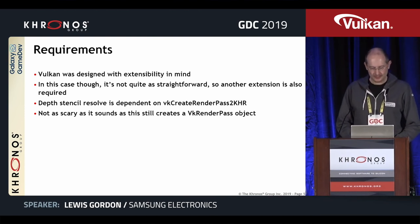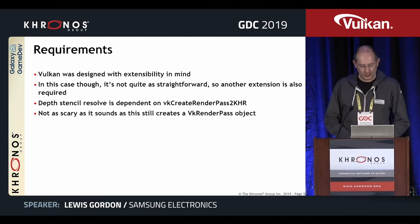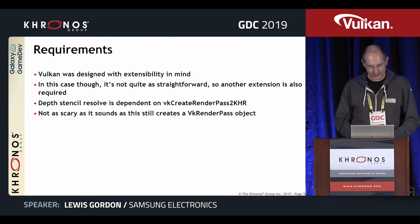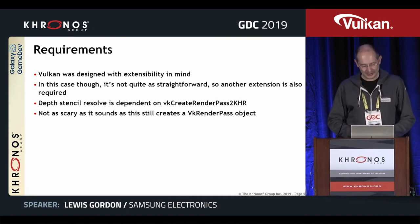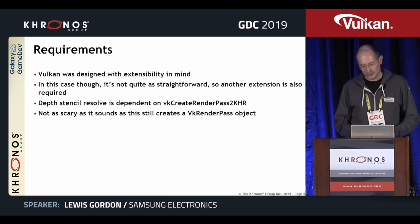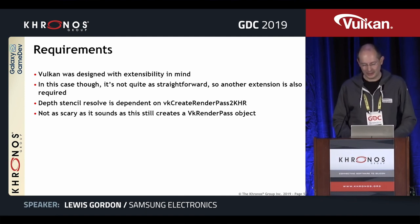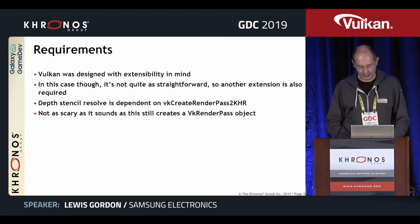The requirements for using this: Vulkan is designed with extensibility in mind, but this extension requires another one. Depth Stencil Resolve is dependent on the Create Render Pass 2 extension. I was a bit apprehensive about that — I thought it would change a lot of code — but it actually still creates a VkRenderPass object. Once you've found the Create Render Pass 2 extension is available, only the creation of the render pass changes. The rest of the code stays the same. Just for depth stencil resolve, you don't need to change too much other code.